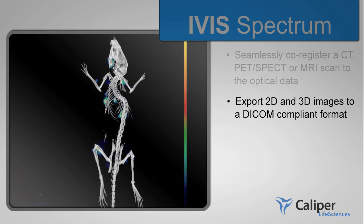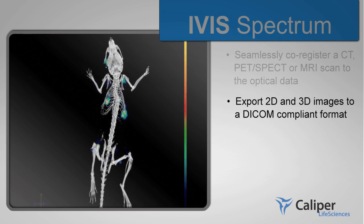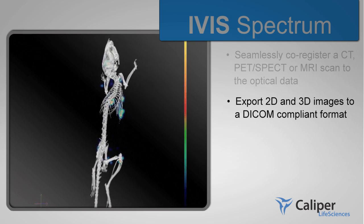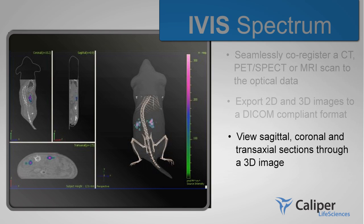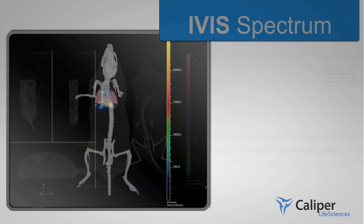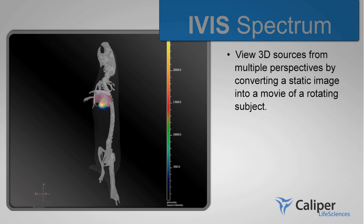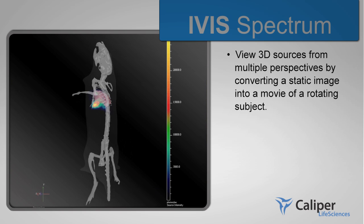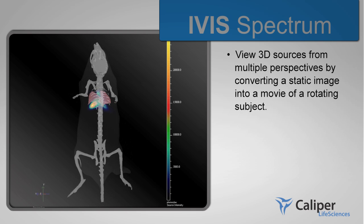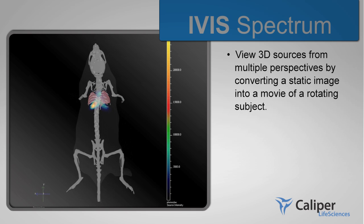Export 2D and 3D images to a DICOM-compliant format. View sagittal, coronal, and transaxial sections through a 3D image, and view 3D sources from multiple perspectives by converting a static image into a movie of a rotating subject.